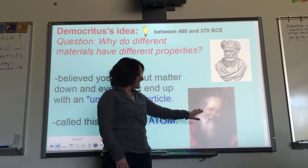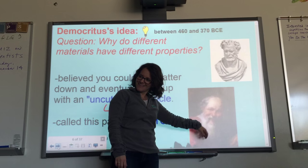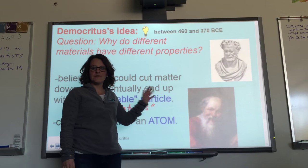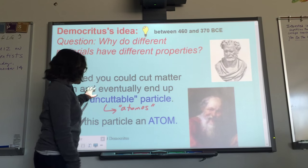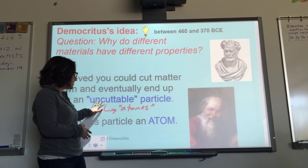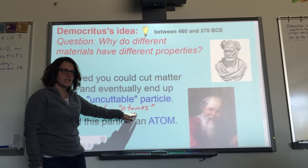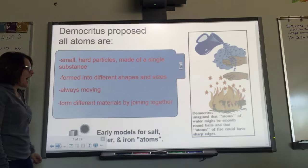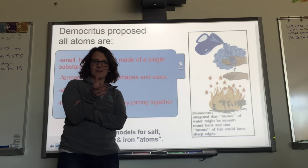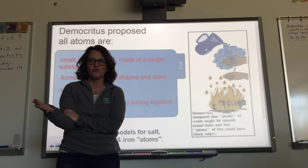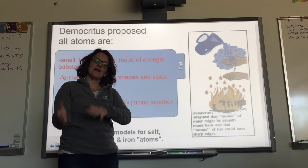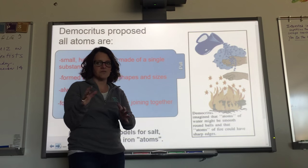So Democritus — Greek philosopher, older than Aristotle — said you're going to have this uncuttable particle, an indivisible particle. He called it 'atomos,' and we changed the name to 'atom.' There was only about a 10 to 14 year overlap between their lifetimes. Democritus died around 370 BCE and Aristotle was born around 384 BCE, so the timeline is: Democritus was first, then Aristotle came.